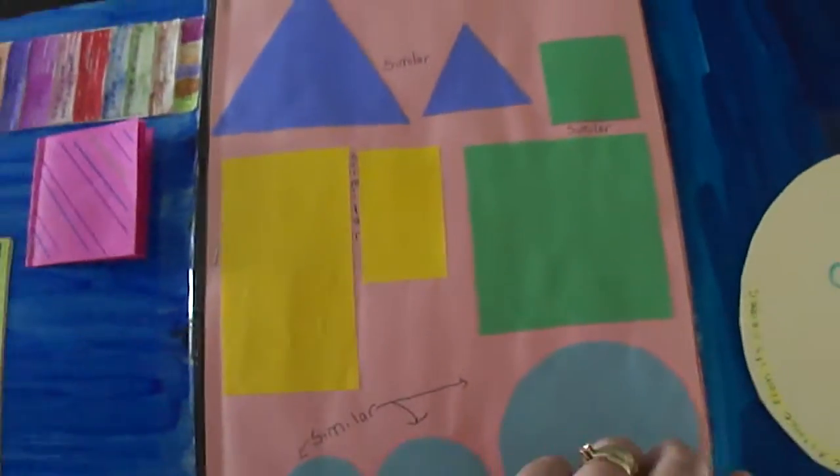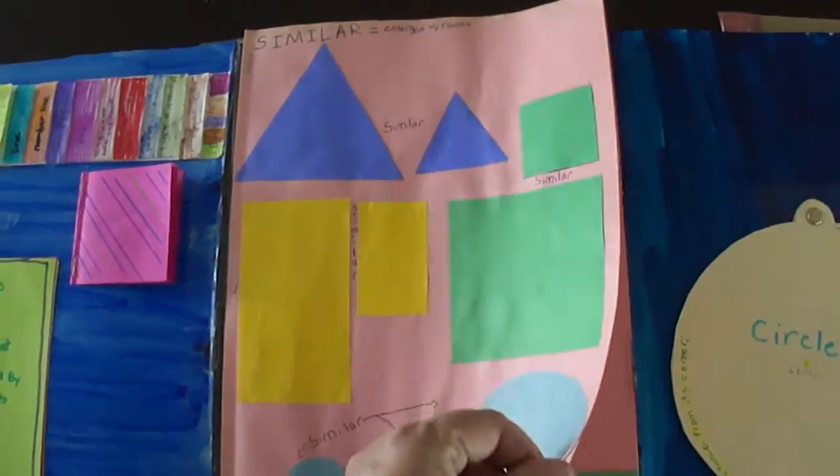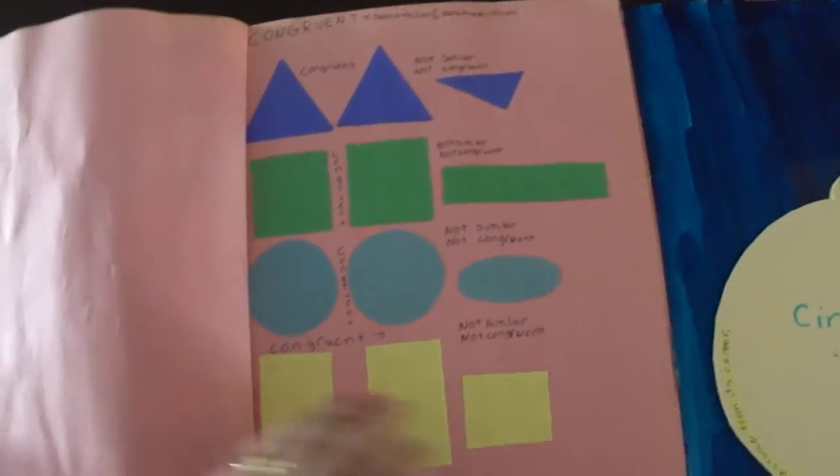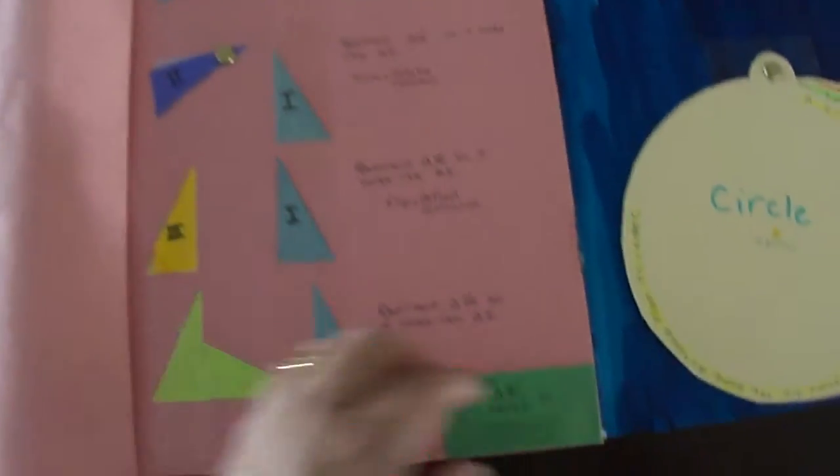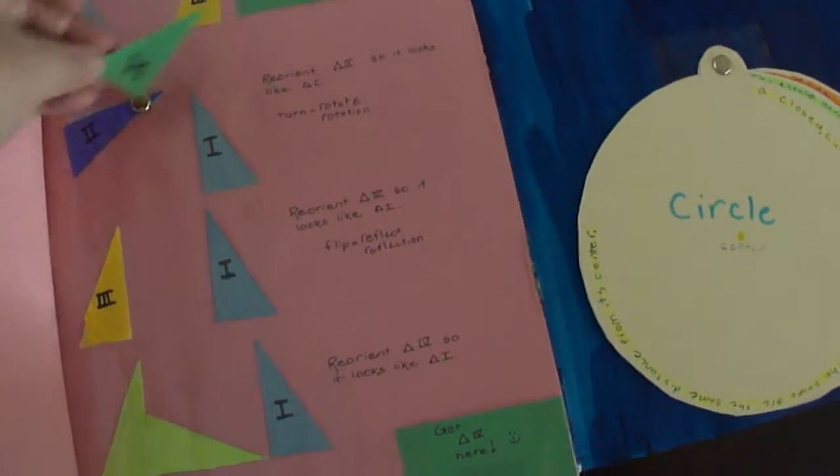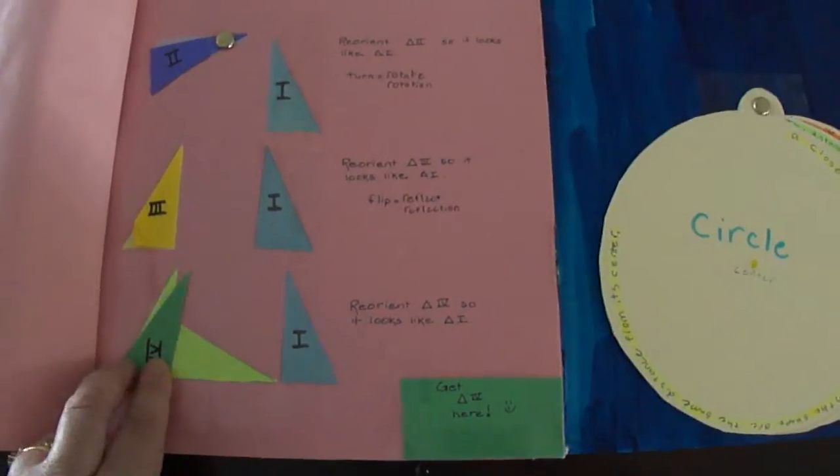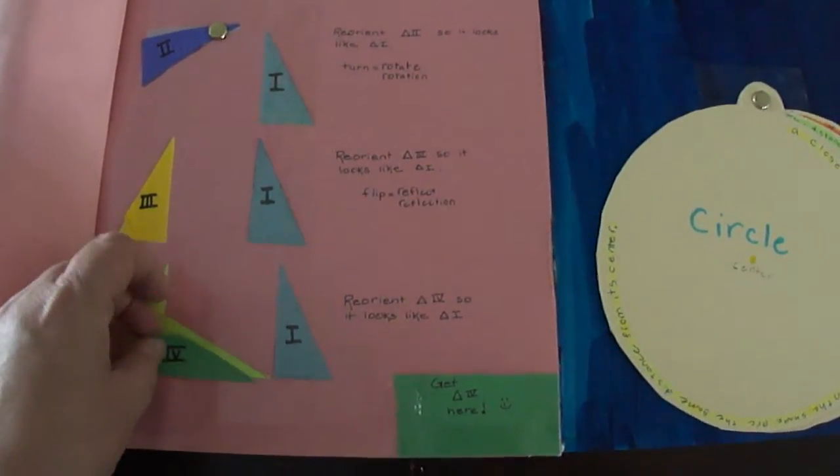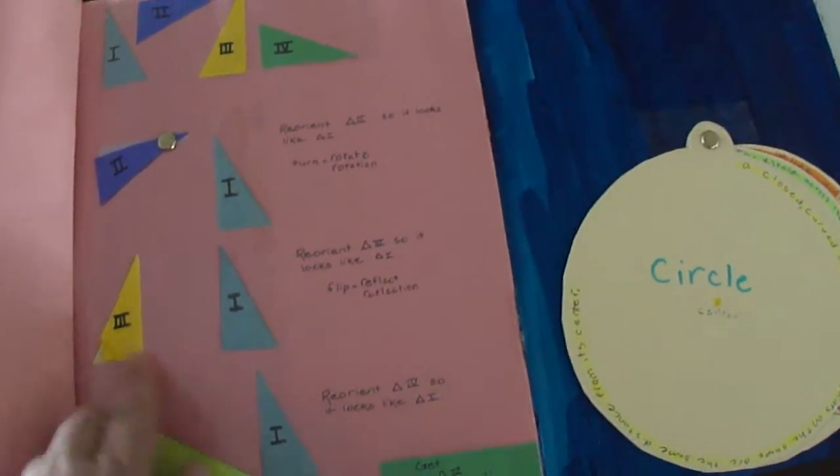On the inside we've got a little game notebook that defines things like similar shapes. Turning the page, congruent shapes, so we see what they look like and what they mean. Then down here she's got these little pockets with little things in them so she can make this easier to learn through kinesthetic learning, where she's actually turning and flipping things to see the different vocabulary words.